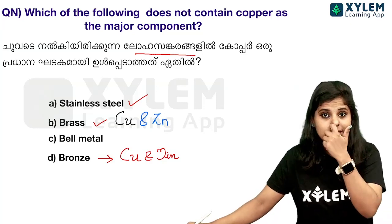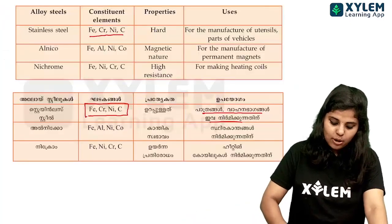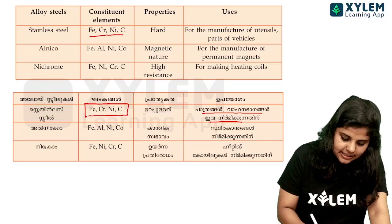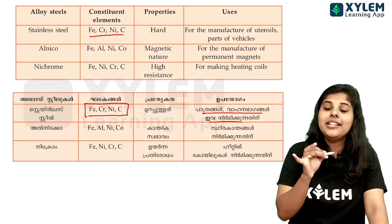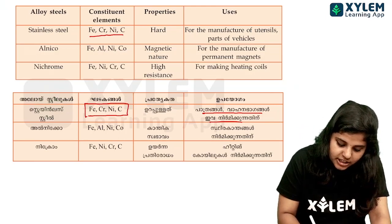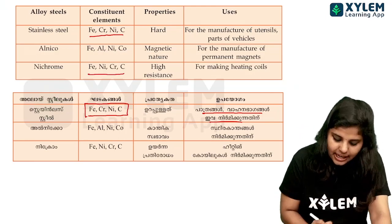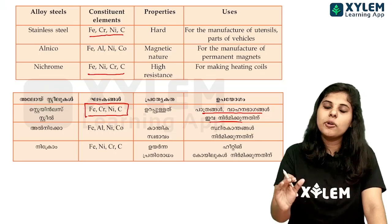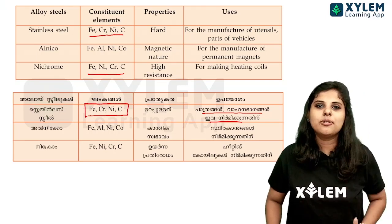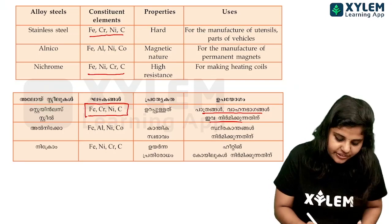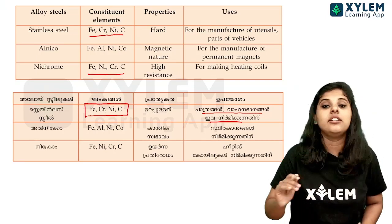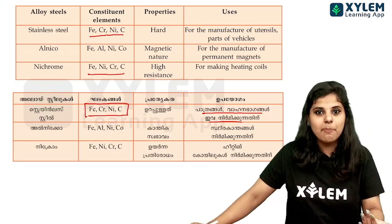You might have doubt about the alloys. In stainless steel, the components are iron, chromium, nickel, and carbon — not copper. That is why we choose stainless steel as the answer — it has different proportions and different composition from copper-based alloys.